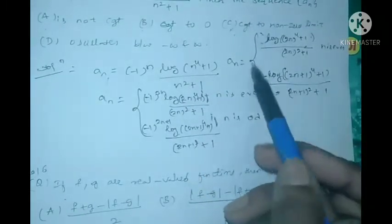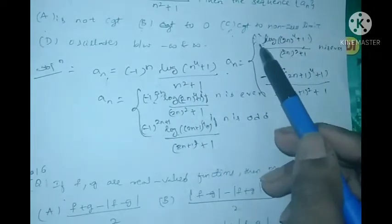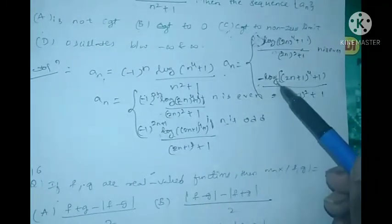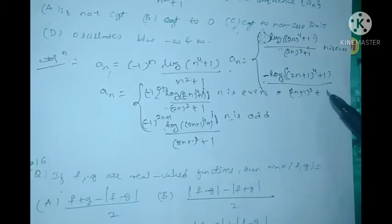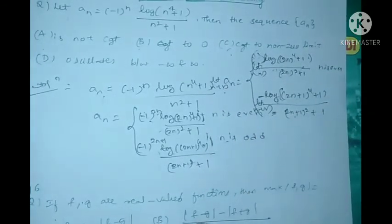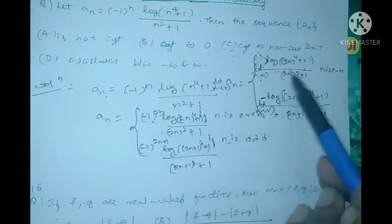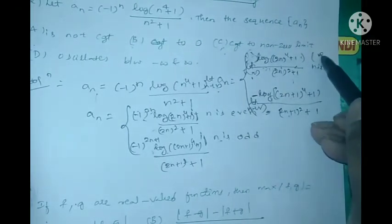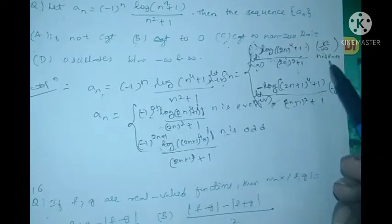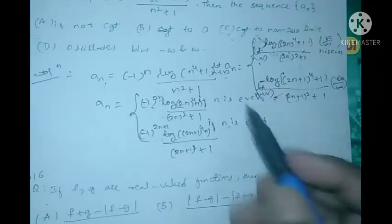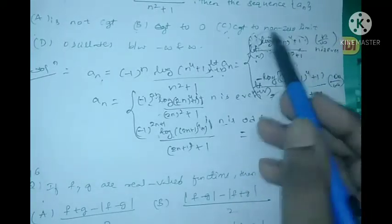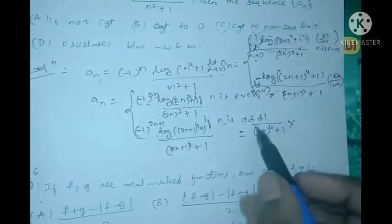After simplifying: if n is even we get log((2n)^4 + 1) / ((2n)^2 + 1), and if n is odd we get minus log((2n+1)^4 + 1) / ((2n+1)^2 + 1). Now we apply the limit as n tends to infinity. Both cases give an infinity/infinity form, so we apply L'Hôpital's rule — differentiating numerator and denominator separately.